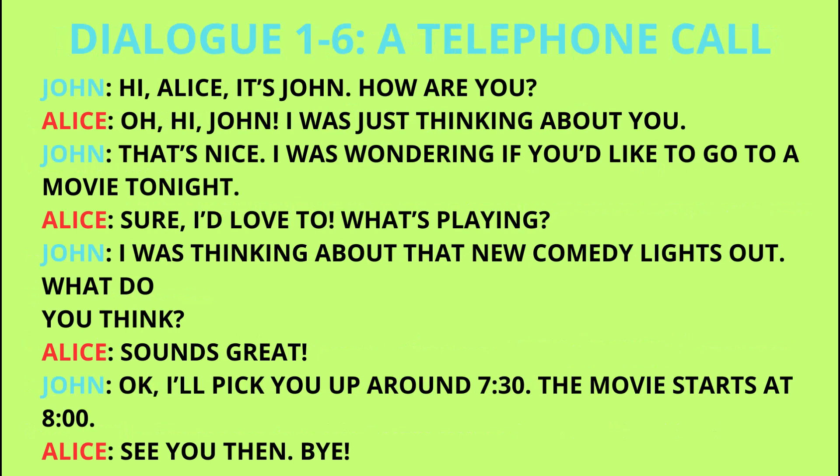Dialogue one-to-six: a telephone call. John: Hi, Alice, it's John. How are you? Alice: Oh, hi, John. I was just thinking about you. John: That's nice. I was wondering if you'd like to go to a movie tonight. Alice: Sure, I'd love to. What's playing? John: I was thinking about that new comedy, Lights Out. What do you think? Alice: Sounds great. John: Okay, I'll pick you up around 7:30. The movie starts at 8 o'clock. Alice: See you then. Bye.